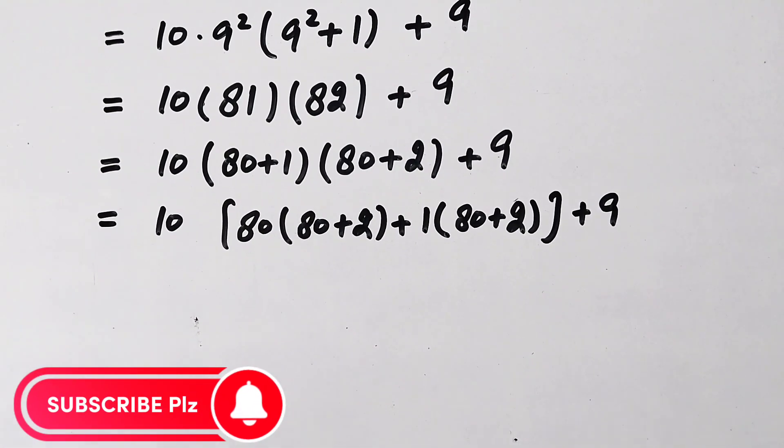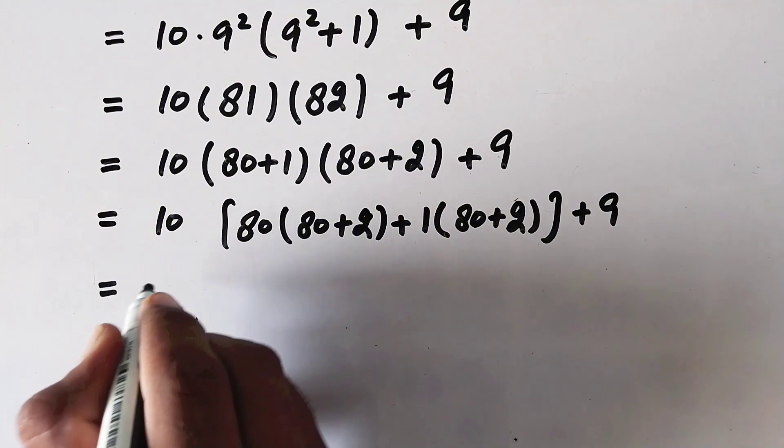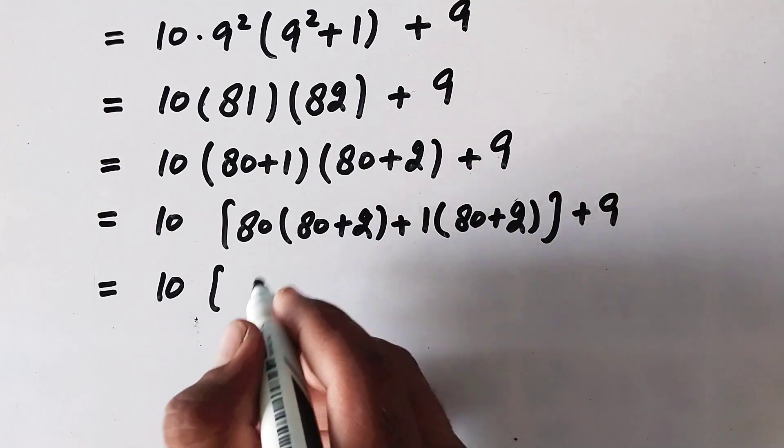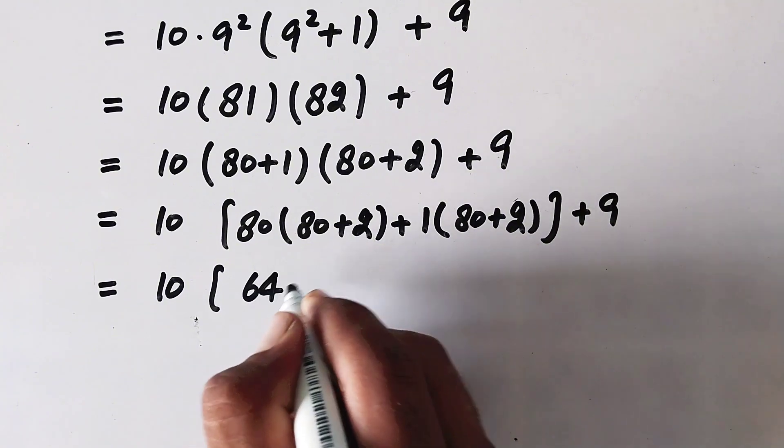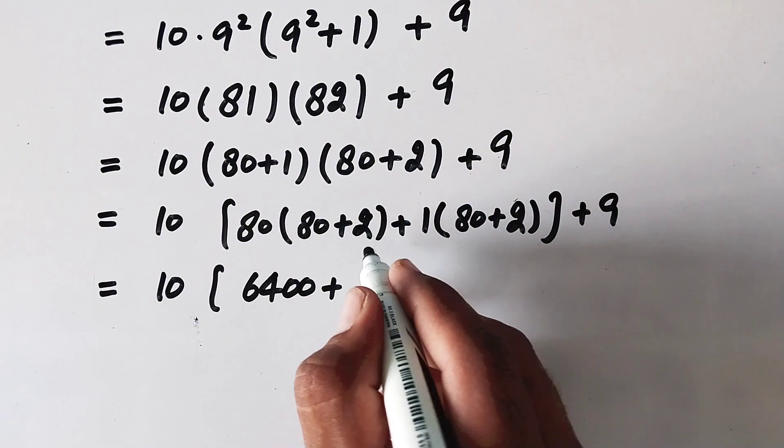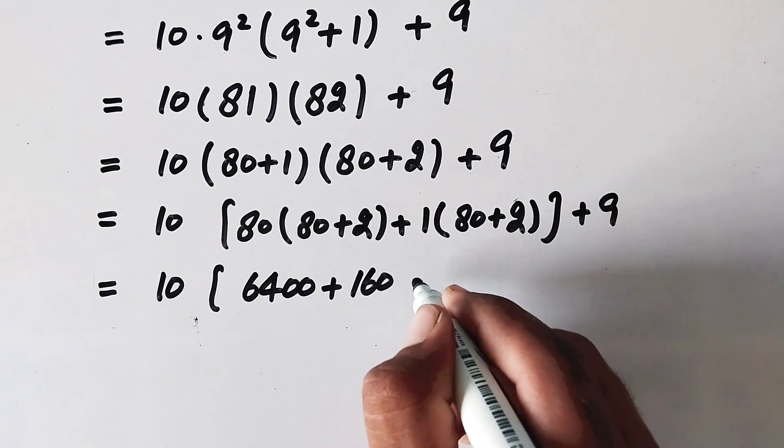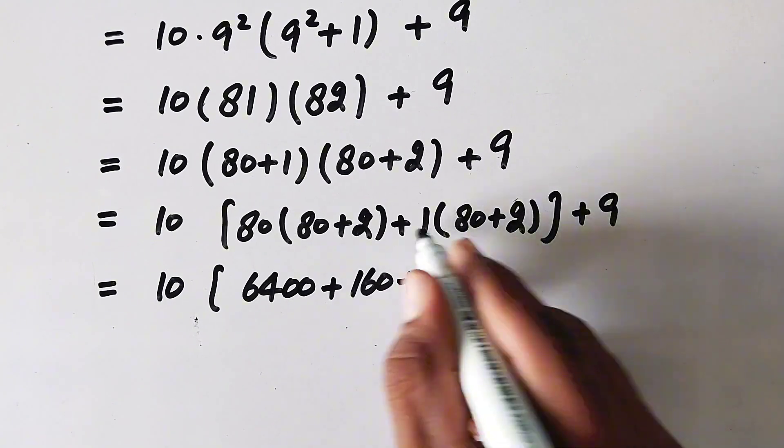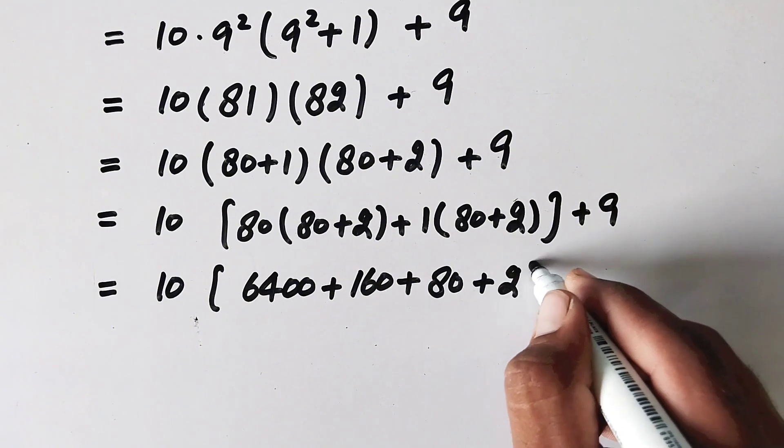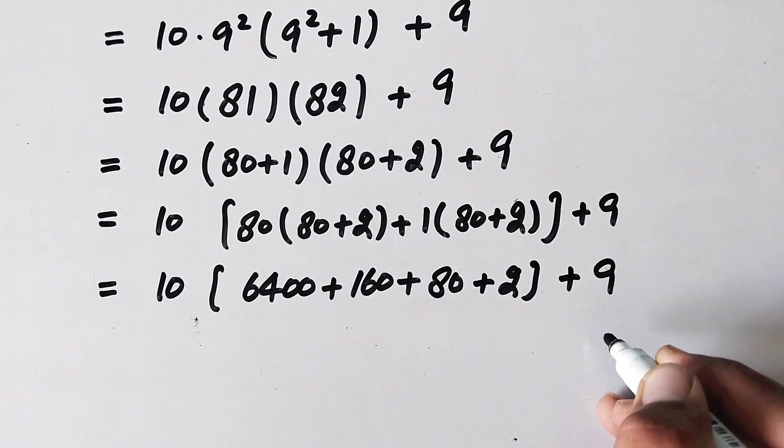It will be equal to 10, and here will be 8 times 8 is 64 with 2 zeros, plus 80 times 2 which is 160, plus 80, plus 2, plus 9.